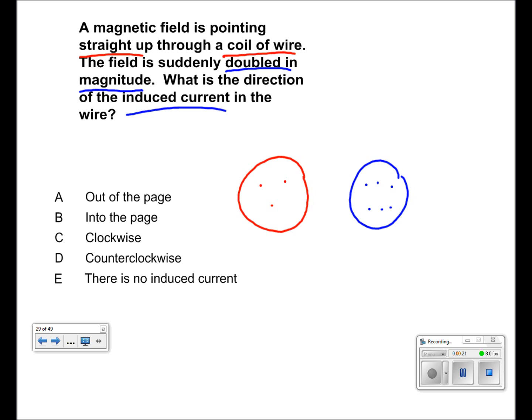Now in order to find induced current, we have to try to make the final field the initial field. So basically we have to add x's to even it out. So then there goes back to the original.